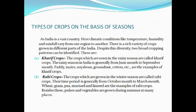Now we move to types of crops on the basis of season. India is a vast country where climatic conditions like temperature, humidity, and rainfall vary from one region to another. This variety of climate is also one reason India ranks among the topmost countries in crop production. Most other countries have mostly cold seasons with very little summer, but India has a variety of seasons, and therefore a variety of crops grown in different parts. Despite this diversity, two broad cropping patterns can be identified: Kharif crops and Rabi crops.